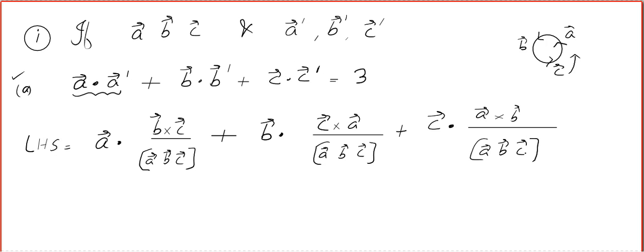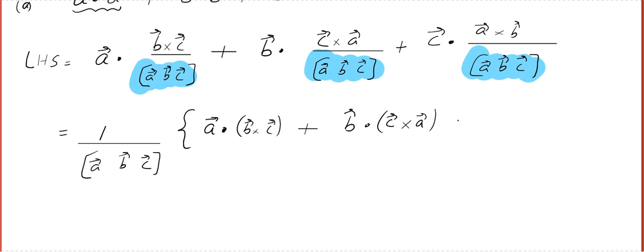Always remember, the scalar triple product is a number, and you can always take the number as a common factor. You don't have to care whether it is dot product, ordinary addition, or cross product. This will come outside.